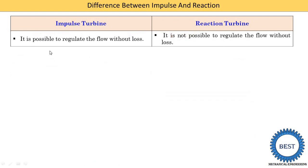In an impulse turbine it is possible to regulate the flow without loss, because water directly strikes the bucket. In a reaction turbine it is not possible to regulate the flow without loss, because water passes through the casing and then the guide wheel — there are more parts, more friction, and losses are increased. So this point is covered on the basis of friction: higher friction means more losses.